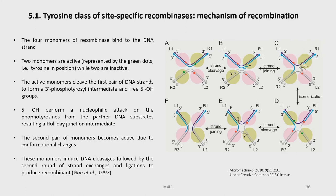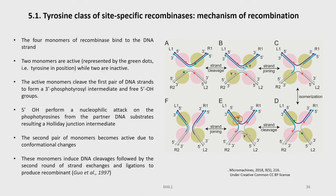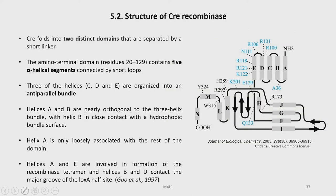The 5'-hydroxyl performs a nucleophilic attack on the phosphotyrosines from the partner DNA substrates, leading to formation of a Holliday junction intermediate. This is followed by an isomerization reaction. The second pair of monomers becomes active due to conformational changes, and these monomers induce DNA cleavage followed by a second round of exchanges and ligations to produce the recombinant DNA molecule.